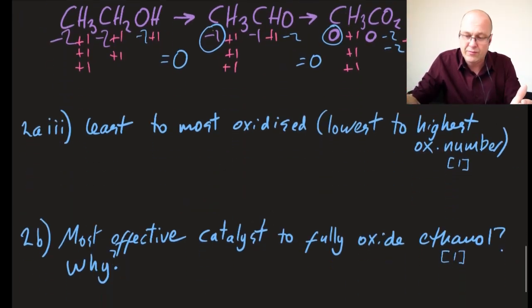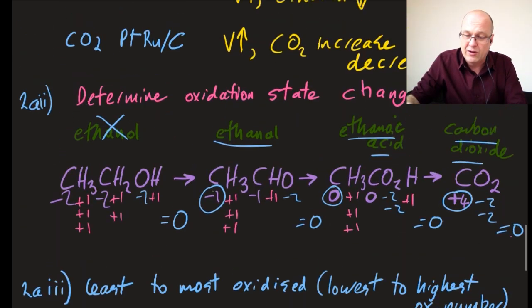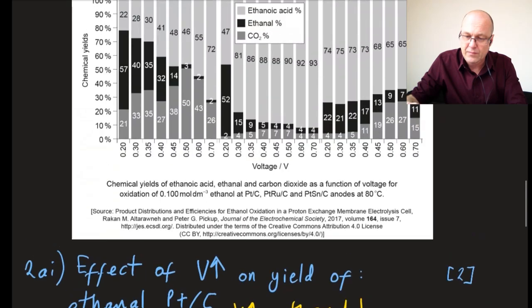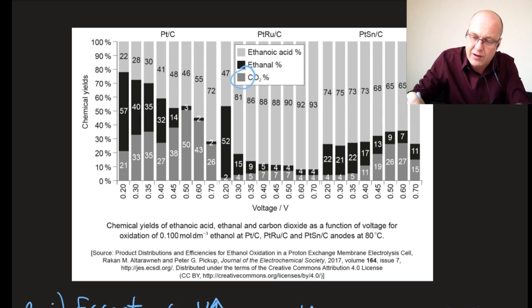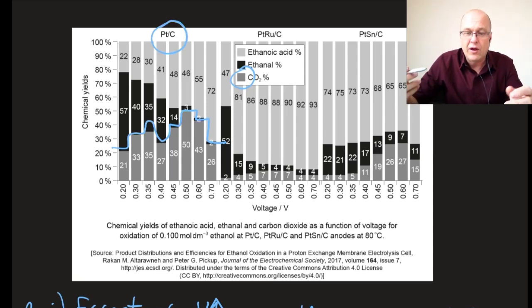Final question: the most effective catalyst to fully oxidize the ethanol and why? Back to this chart. The most effective catalyst to make the most carbon dioxide—they'd give you error carried forward if you didn't realize it was carbon dioxide—well that seems clear. If that's carbon dioxide, then it's this catalyst: platinum carbon. That's not enough for the point, you have to say why.